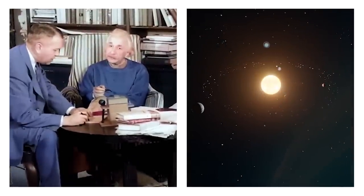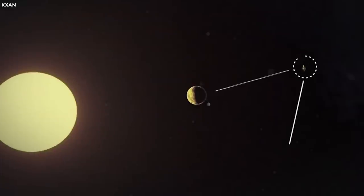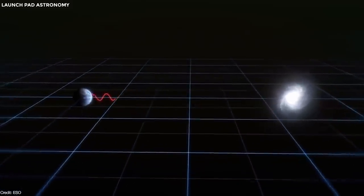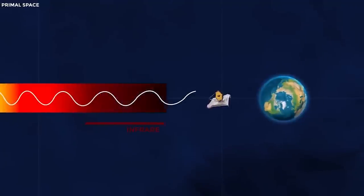Einstein's theory tells us that the space between things, including light, expands. As light from early stars travels, it stretches into invisible infrared due to redshift. But how does James Webb spot this light?